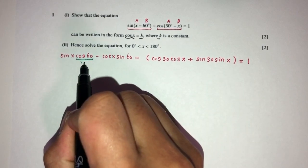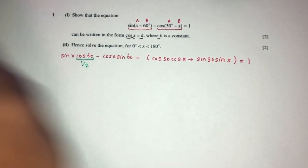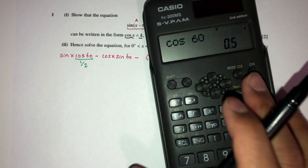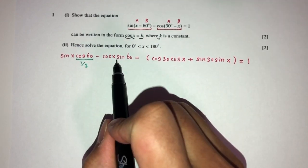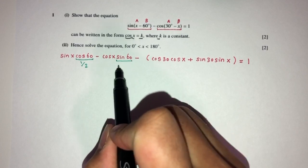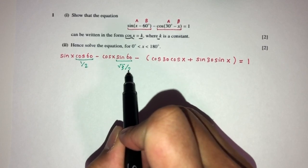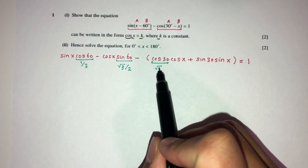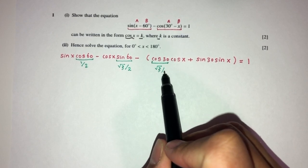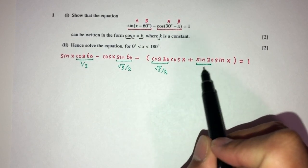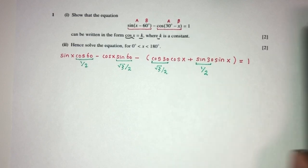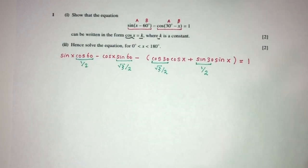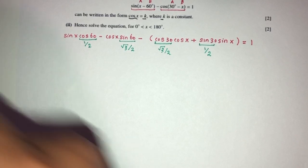Now we have to substitute the exact values. cos 60° = 1/2 — you can double-check that. sin 60° = √3/2. cos 30° = √3/2. And sin 30° = 1/2 as well. You can use your calculator to verify these values.